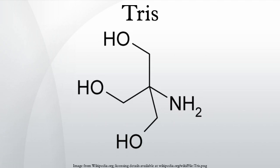Preparation: Tris is prepared industrially in two steps from nitromethane via the intermediate (HOCH₂)₃CNO₂. Reduction of the latter gives Tris, also known as tris(hydroxymethyl)aminomethane.